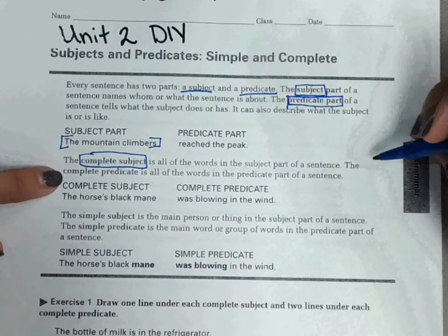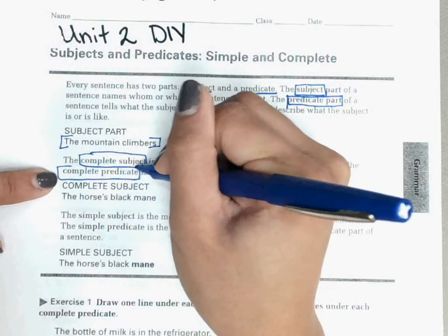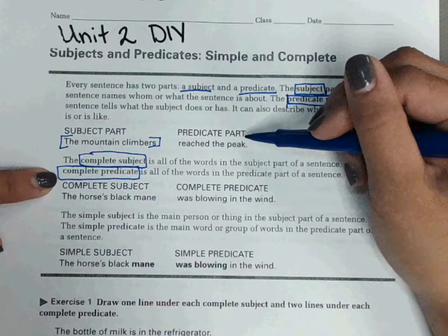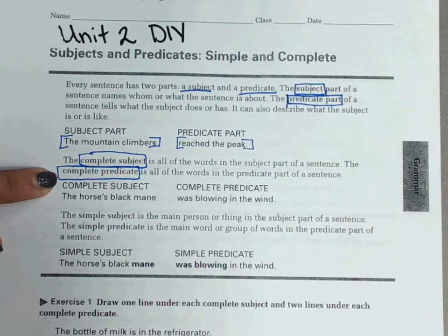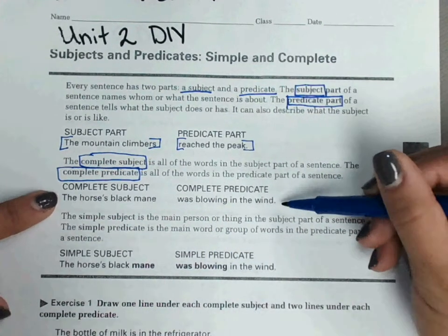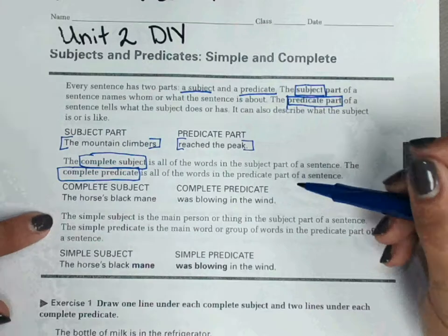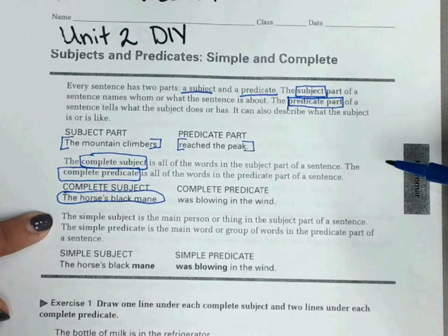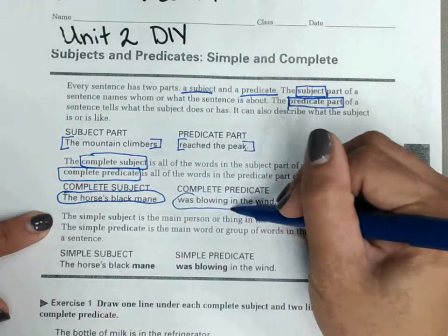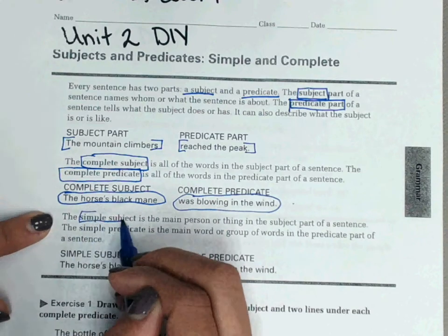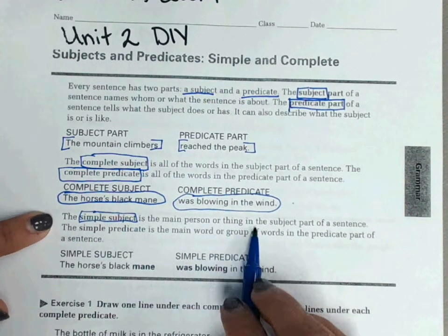The complete predicate is all of the words in the predicate part of a sentence, so in our example, 'reached the peak' is our complete predicate. Our second example gives us the complete subject and the complete predicate of this sentence: 'The horse's black mane was blowing in the wind.' 'The horse's black mane' is our complete subject, and 'was blowing in the wind' is our complete predicate.